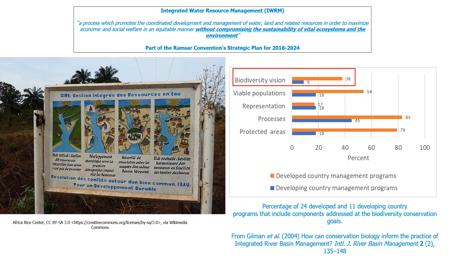However, this part of integrated water resource management — not compromising ecosystems and the environment — tends to get overlooked compared to maximizing economic and social welfare. A study, albeit back in 2004, highlighted this, showing that at that time few water resource management programs addressed biodiversity planning as a long-term goal, and less than 40% of country programs included visions for biodiversity conservation. The underrepresentation of biodiversity and ecosystem function in integrated water resource management planning is still a problem.